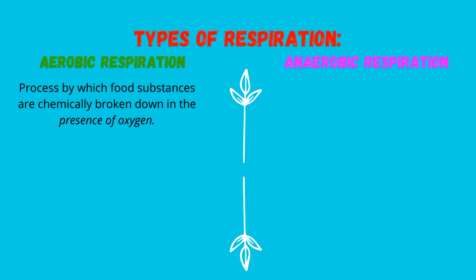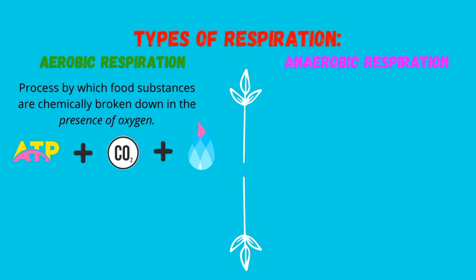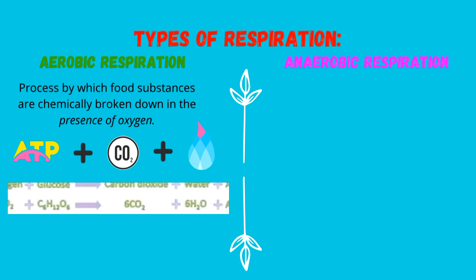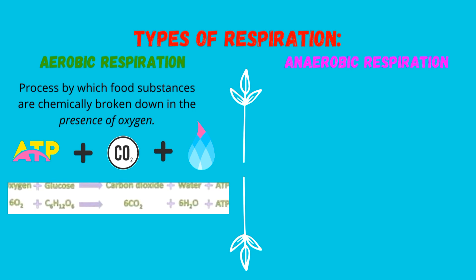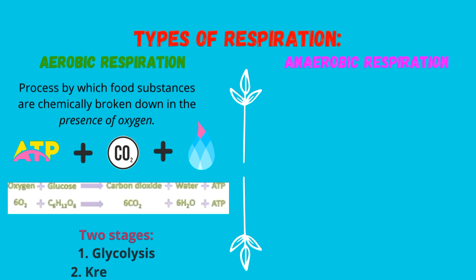There are three products from aerobic respiration. Number one: energy, in the form of ATP — adenosine triphosphate. We also have carbon dioxide and water being produced. This can be summarized using a chemical equation. Aerobic respiration occurs in two stages: the first stage being glycolysis, and the second stage being the Krebs cycle.